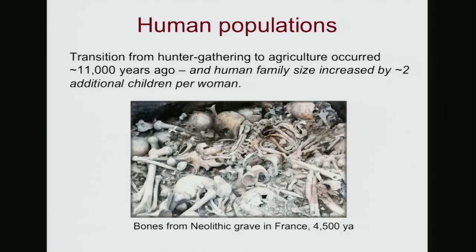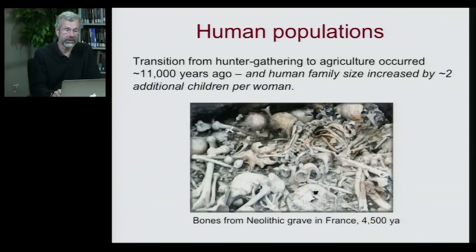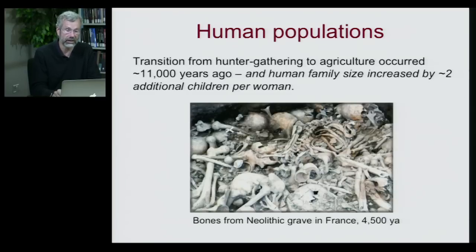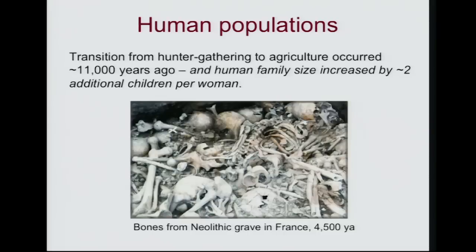One of the most important transitions in human history was going from hunter-gathering to agriculture. This happened about 11,000 years ago, and demographers have been able to estimate that with the advent of agriculture — that stable food supply we had control of — our population size grew rapidly because each family produced two additional children per woman. That's an enormous increase in family size with the advent of agriculture.